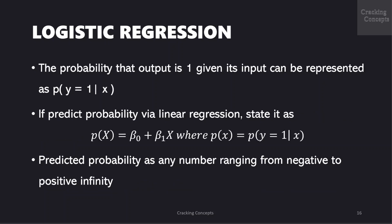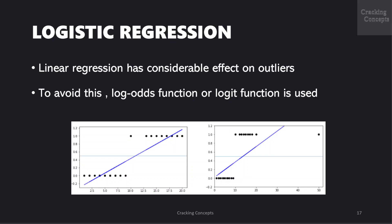Now we will see why the model chosen is logistic instead of linear. With binary classification, let x be some feature and y be the output which can be either 0 or 1. Now the probability that the output is 1 given its input can be represented as p of y equal to 1 given x. If we predict the probability using linear regression, we can state it as p of x is equal to beta 0 plus beta 1x where p of x is given by p of y equal to 1 given x. Now linear regression model can generate the predicted probability as any number ranging from negative to positive infinity whereas probability of an outcome can only lie between 0 and 1. Also linear regression has considerable effect on outliers as shown in the figure.